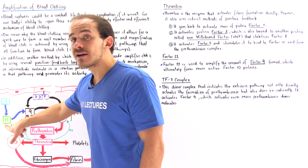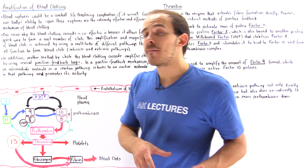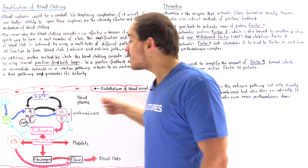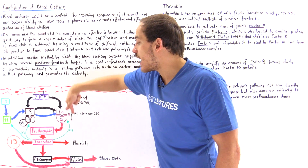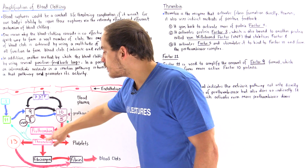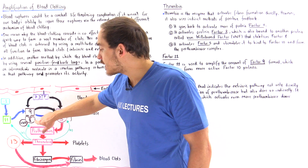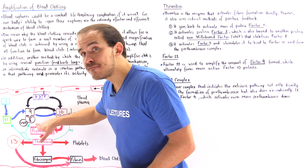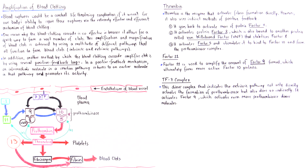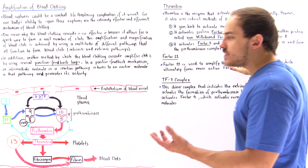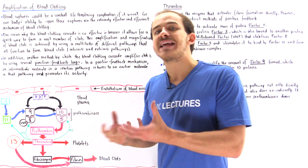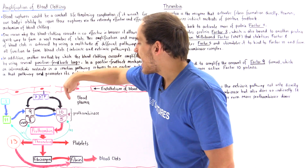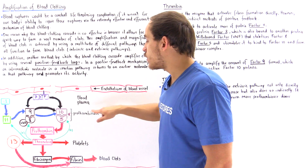Thrombin goes to factor 11, takes the inactive form and activates it. What factor 11 does is activate factor 9, and that ultimately creates more of these dimers as shown in the diagram. Thrombin also activates factor 8. Factor 8 circulates in our blood and attaches to VWF — the von Willebrand factor — which is a protein that attaches to factor 8 and stabilizes its structure, then attaches to factor 9, and this complex goes on to activate the formation of prothrombinase.